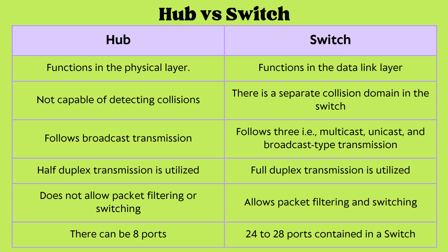The differences between a hub and a switch: a hub functions at the physical layer, while a switch functions at the data link layer. A hub is not capable of detecting collisions, whereas the switch has a separate collision domain. The hub follows broadcast transmission; the switch supports multicast, unicast, and broadcast using MAC addresses. Hub is half-duplex; switch is full-duplex. Hub doesn't allow packet filtering, but switch does. A hub typically has 8 ports; a switch can have 24 or 28 ports. Overall, a switch is more advanced than a hub.